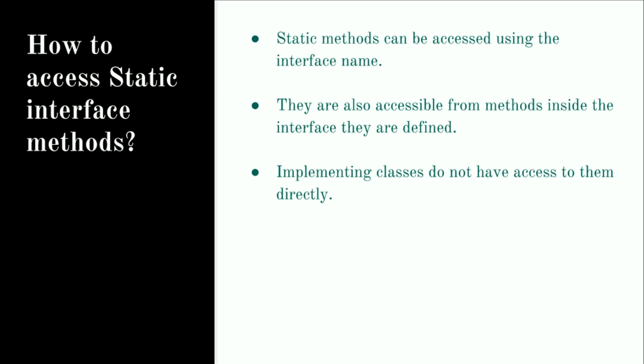Implementing classes do not have direct access — they must use the interface qualifier to access static interface methods. If class B is implementing interface A, it cannot directly access the static interface methods of A. Within class B, you have to say A.methodName. You cannot access them without qualifying the method name with the interface name.